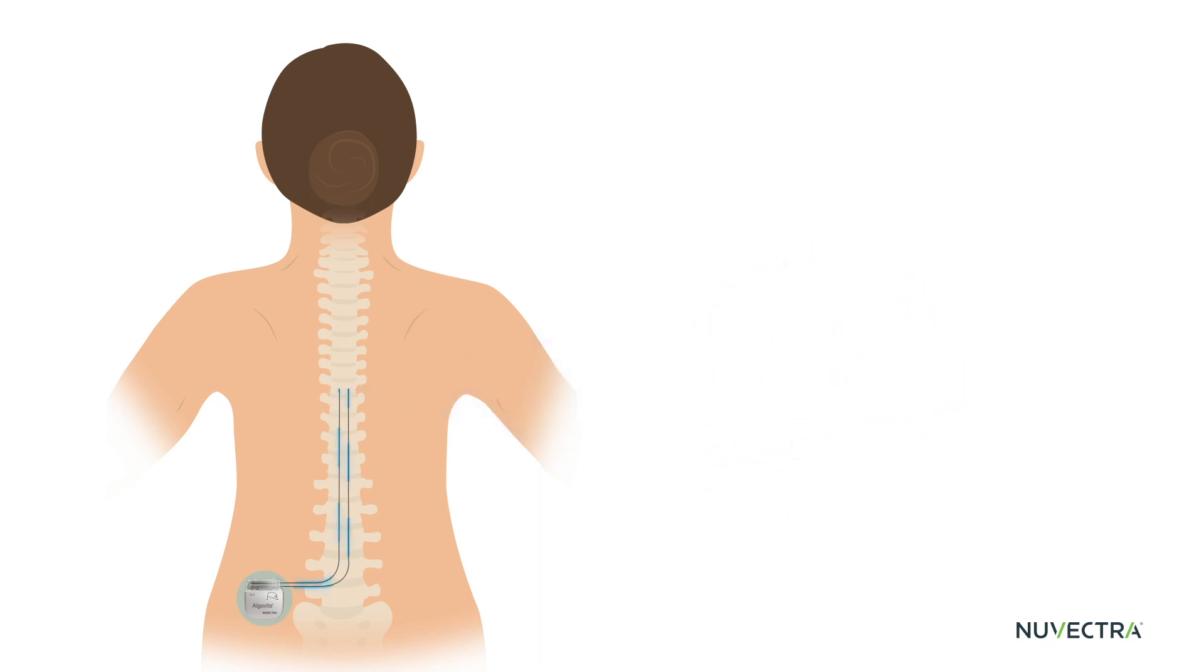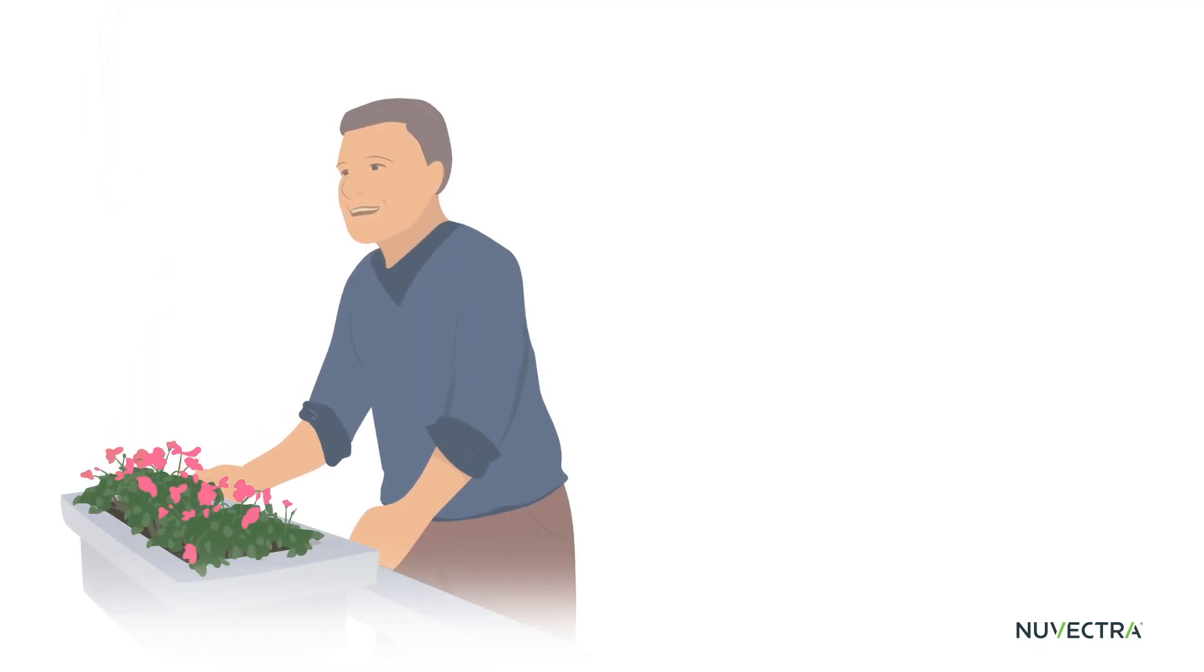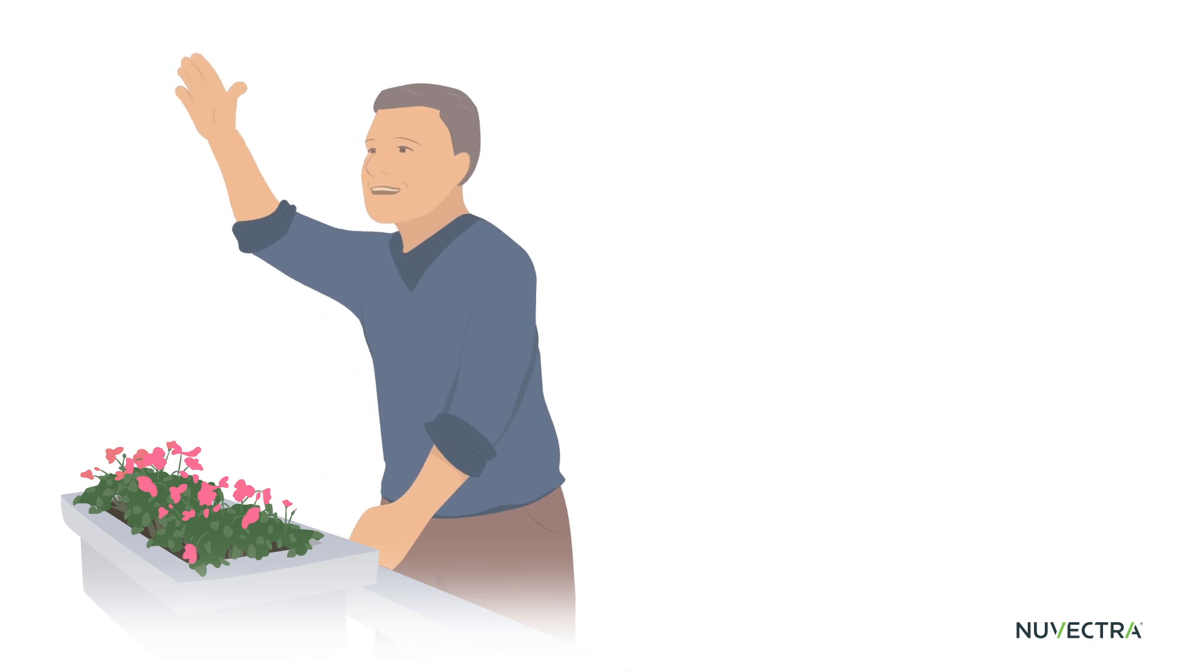The IPG generates mild pulses of energy that travel through the leads to nerves along the spinal cord and interrupt the pain signals transmitted to the brain. Instead of letting your pain control you, you're able to outsmart and conquer your pain.